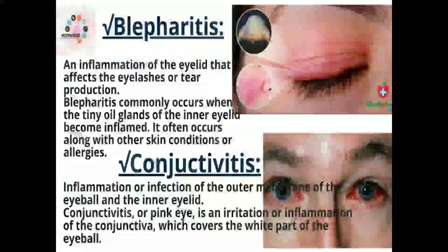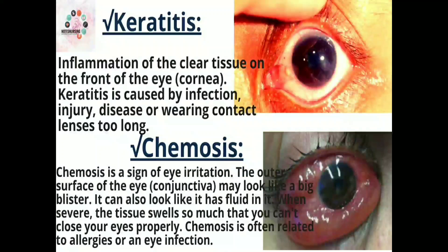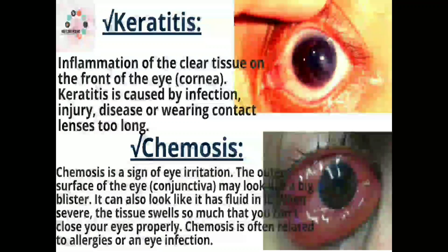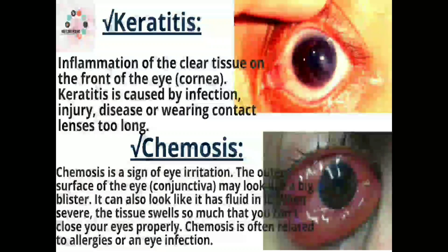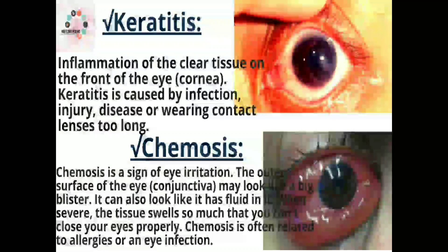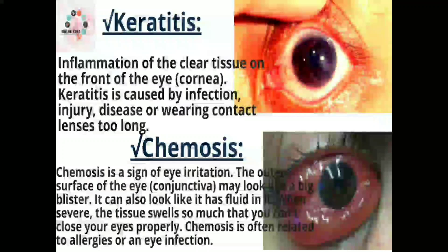Next is keratitis. As you can see in the picture, it is inflammation of the clear tissue in the front of the eye, also called the cornea. Keratitis is caused by infection, injury, disease, or wearing contact lenses too long.